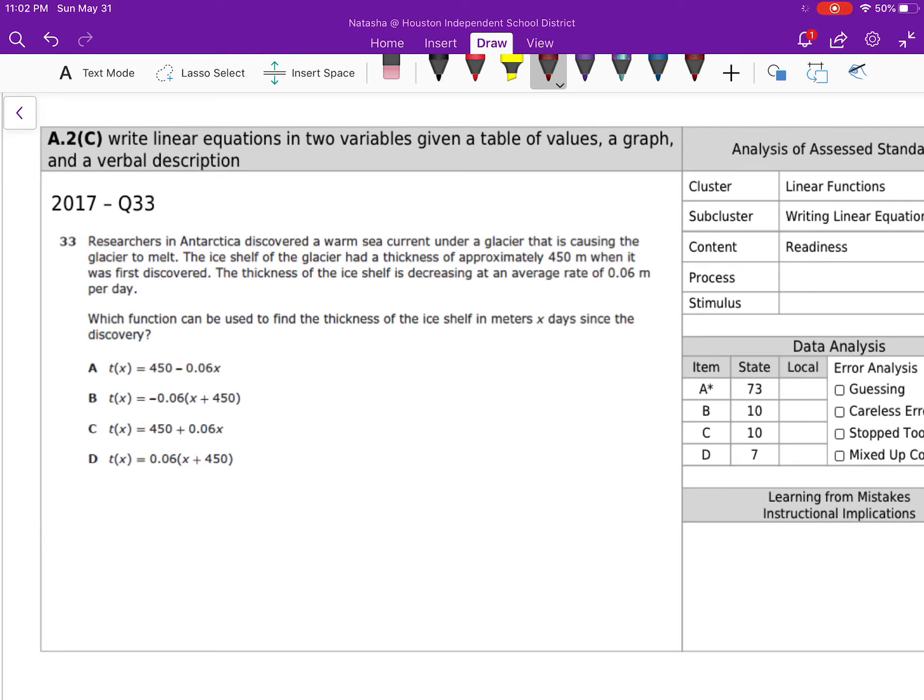All right, this one's kind of fun. So we have researchers in Antarctica, they discover a warm sea current under the glacier that is causing the glacier to melt. The ice shelf of the glacier has a thickness approximately 450 meters when it was first discovered. So just like that other question, we know that when we first look at this, it's 450 meters and then the thickness of the shelf is decreasing, so minus an average rate, average rate that's your clue, that's your slope, 0.06 per day, so that's going to be x.